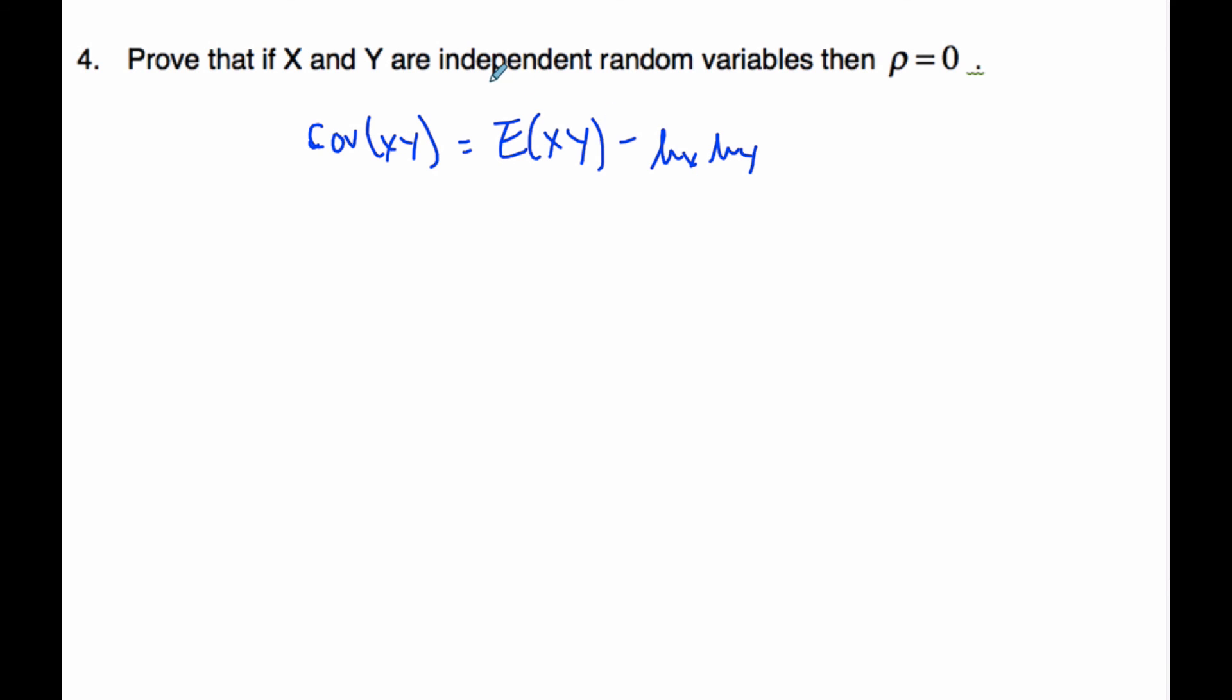But if my variables are independent, then it is true that this equals—which was shown ages ago in some video—the expectation of X times the expectation of Y. Well, that is the expectation of X, this is the expectation of Y, and so it ends up being 0.